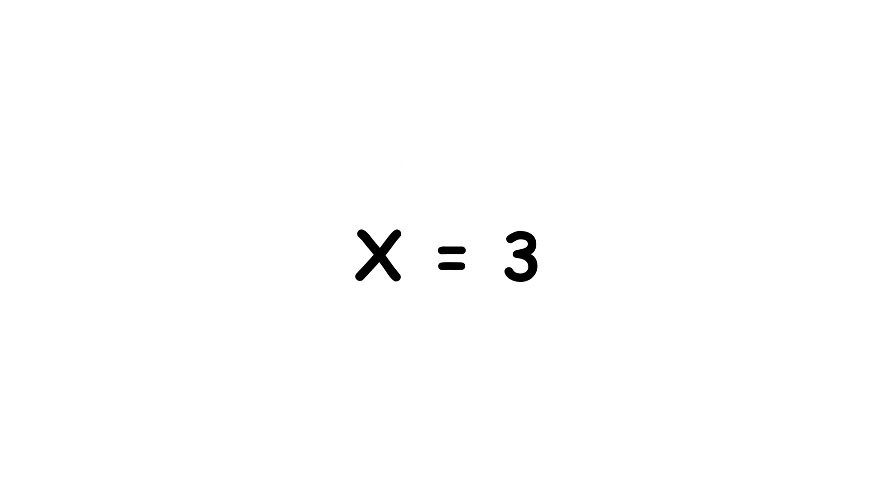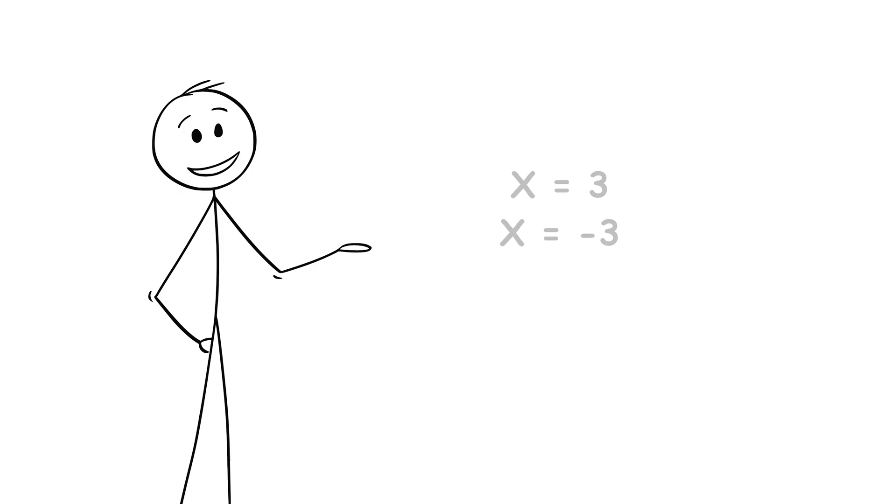So x equals 3 and x equals negative 3 are our solutions. Keep in mind that x has to be a real number for this reasoning to work. But we will look at complex numbers in due time.